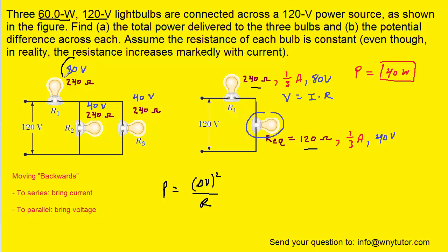And that will complete part B of the question. We have 80 volts on R1, 40 volts on R2, and 40 volts also on R3.